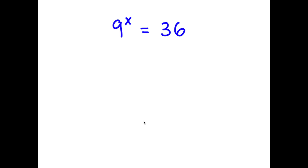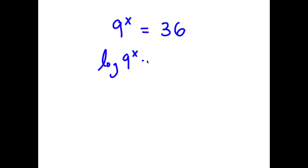In this problem, I have 9 to the power of x is equal to 36. To solve this, I'm going to first start by taking the log on both sides. So now I have log of 9 to the power of x is equal to log of 36.